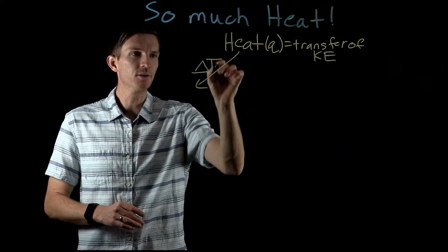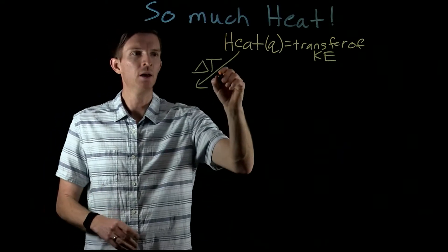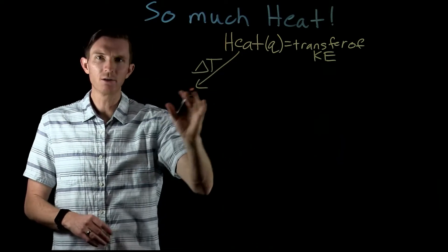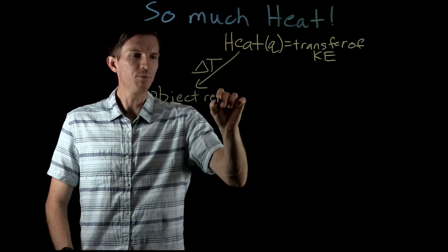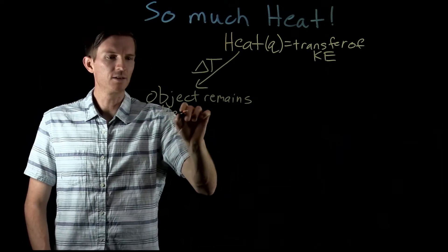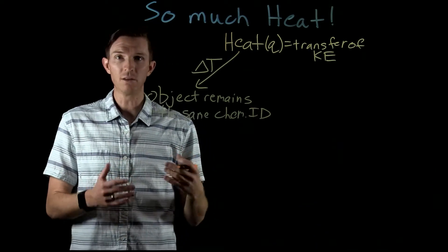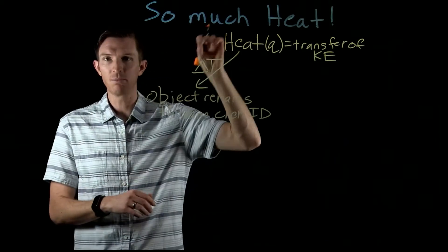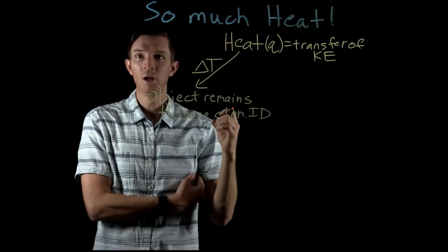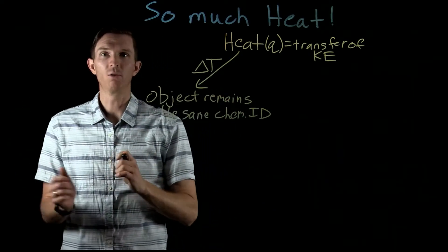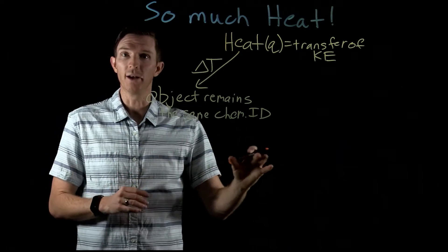One of those ways is that an object undergoes a temperature change. For something to undergo a temperature change and release or absorb heat, we notice that the object remains the same chemical identity — we're not forming something new. A piece of copper stays copper; water stays water. The copper isn't reacting to form copper oxide, and the water isn't reacting to form hydroxide.